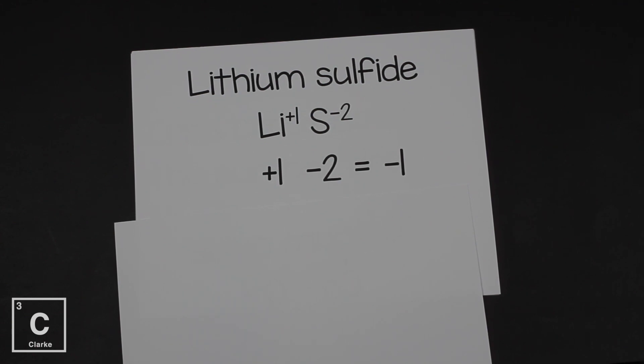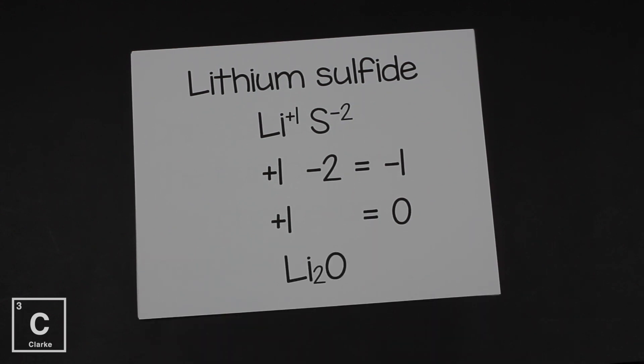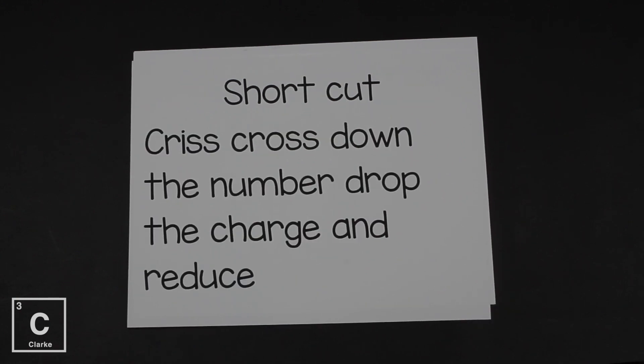Remember, an ionic compound only forms when we have got zero as the net charge. That means we're going to need two lithiums. We need two plus one charges to balance out that minus two charge. So we can equal zero. That means we're going to need two lithiums for every one oxygen. Li2S.